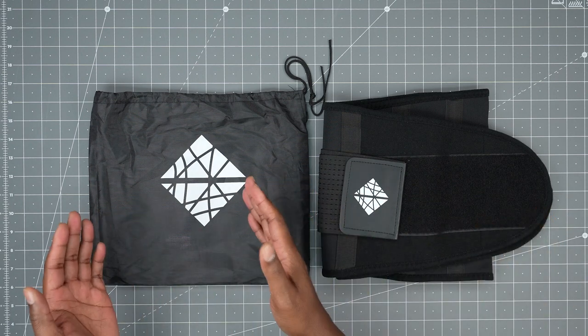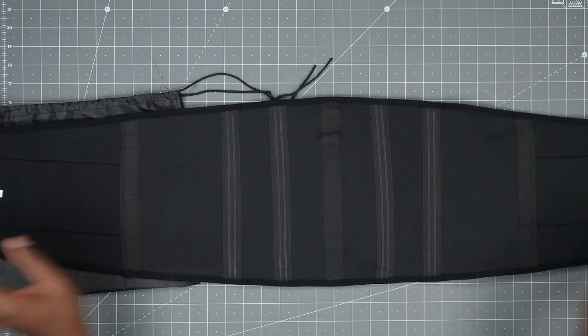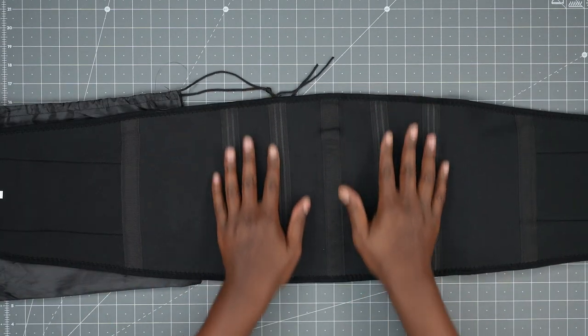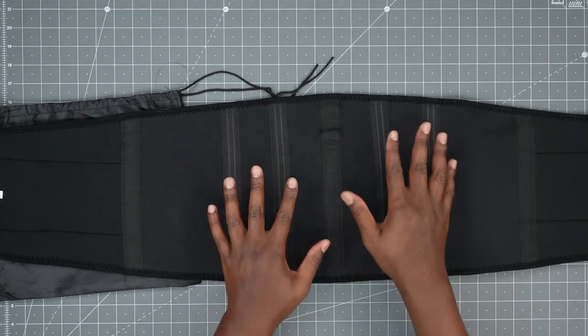Here is the lower back brace. You get a nice little carrying pouch with it. Now on the inside you have some anti-slip grips. If you rub your hands against it you feel a little friction so you can put it over clothes or your skin and it won't move.